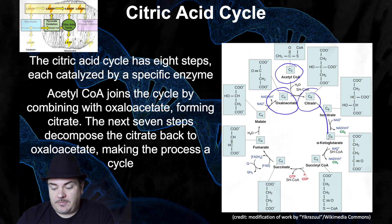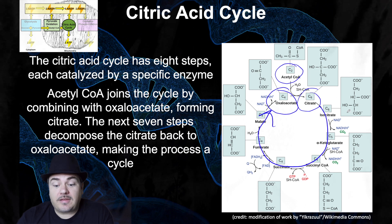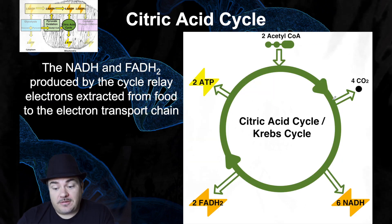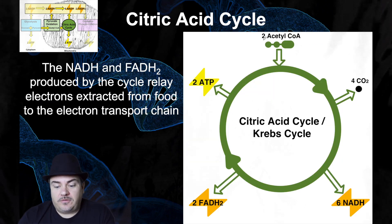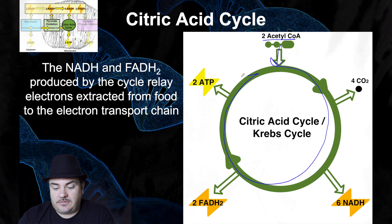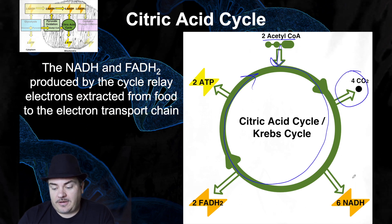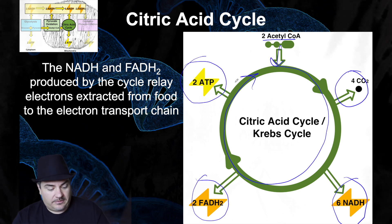The next seven chemical reactions — which you don't need to memorize in detail — take the citrate and break it back down into oxaloacetate. That's why it's called a cycle: the thing you start with, oxaloacetate, is the thing you end with. As the two acetyl-CoAs are broken down, they release as waste products four carbon dioxide, six NADHs, two FADH2s, and two ATPs.